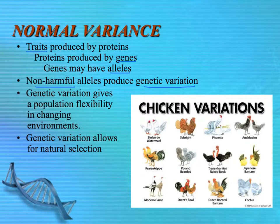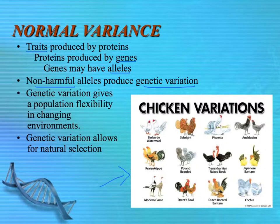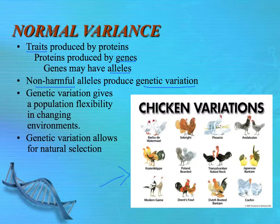We see genetic variation in things like different types of chicken coloration, or think about dogs — the many different sizes, shapes, and hair textures. If you have a lot of genetic variation in a population, then if things change in the environment — if the temperature changes or a food supply has to change — that population can survive because the organisms that have the trait better suited to that environment will be able to reproduce and continue on with the population.